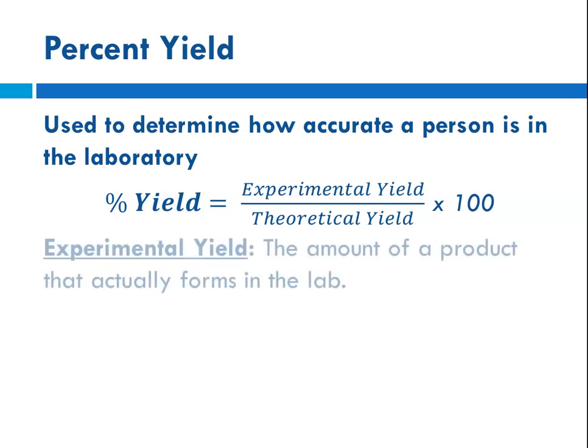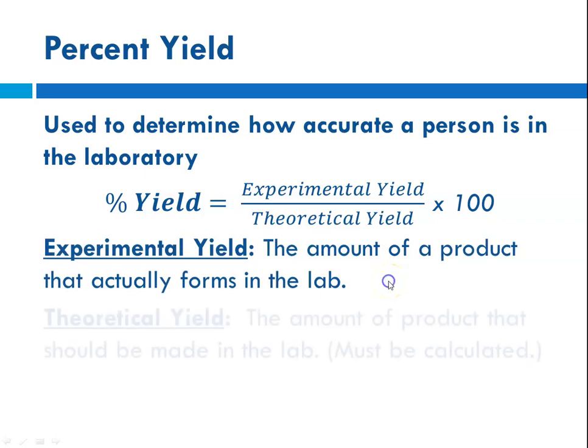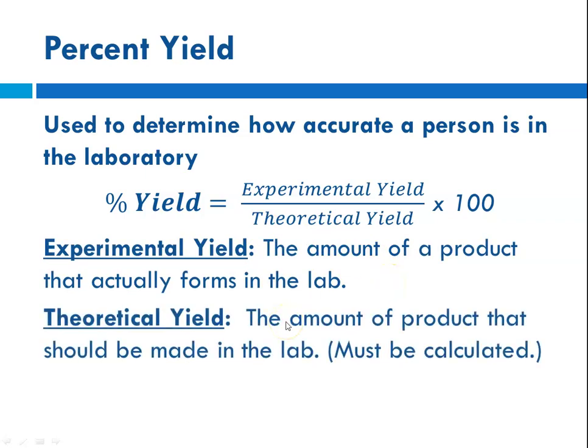So the experimental yield is the amount of a product that actually forms in a lab. The theoretical yield is why we do stoichiometry. It's the amount of product that should be made in the lab, which is calculated using stoichiometry.